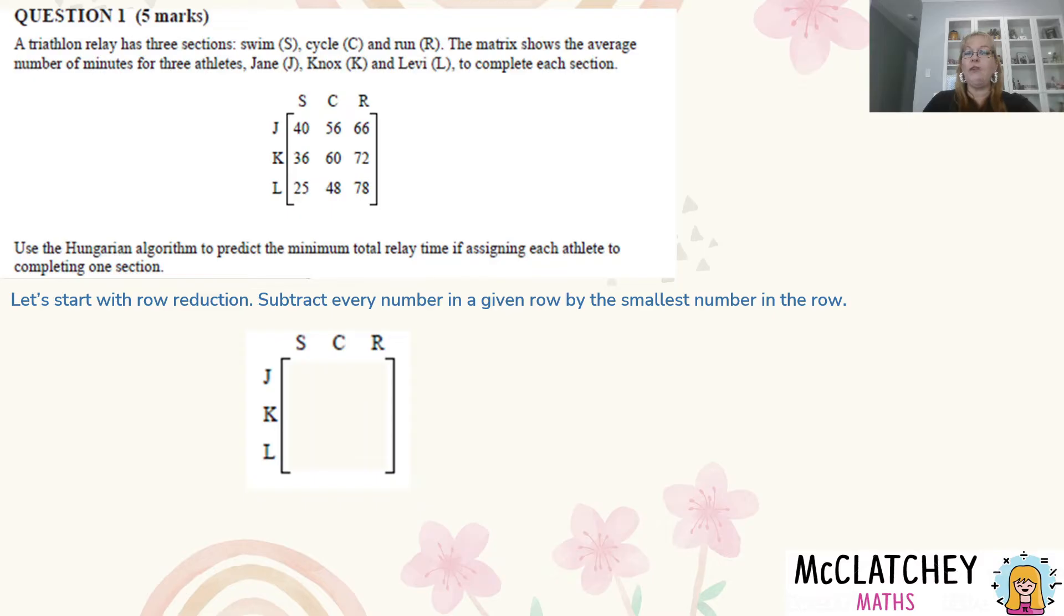I'm going to redraw the matrix exactly as I see it up here just without the numbers in it and I'm going to look in that first row. The number 40 is the smallest number in that row so I'm going to take 40 away from each of these numbers. 40 take away 40 gives me 0, 56 take away 40 gives me 16, and 66 take away 40 gives me 26. So I've completed the first row.